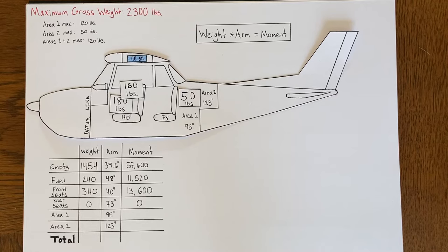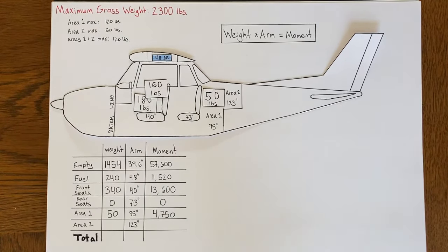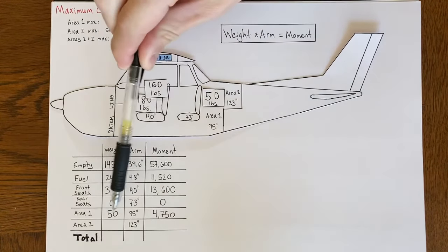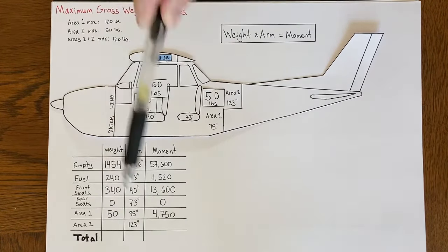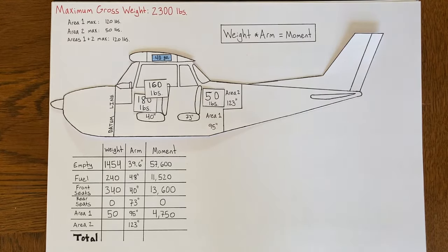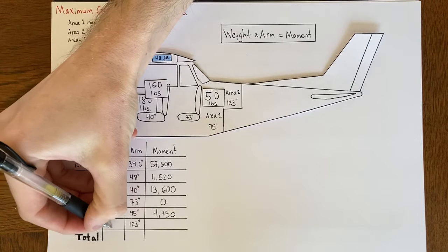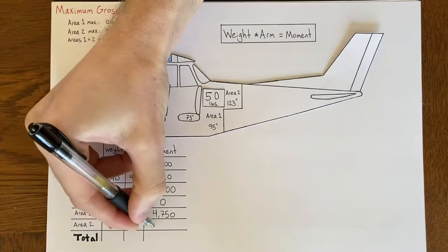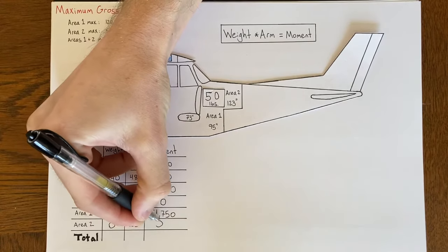For baggage area one, we put in 50 pounds of bags. The moment is 50 pounds times 95 inches, which equals 4,750 inch-pounds. For baggage area two, we didn't put anything back there, so the weight, moment, and arm are all zero.